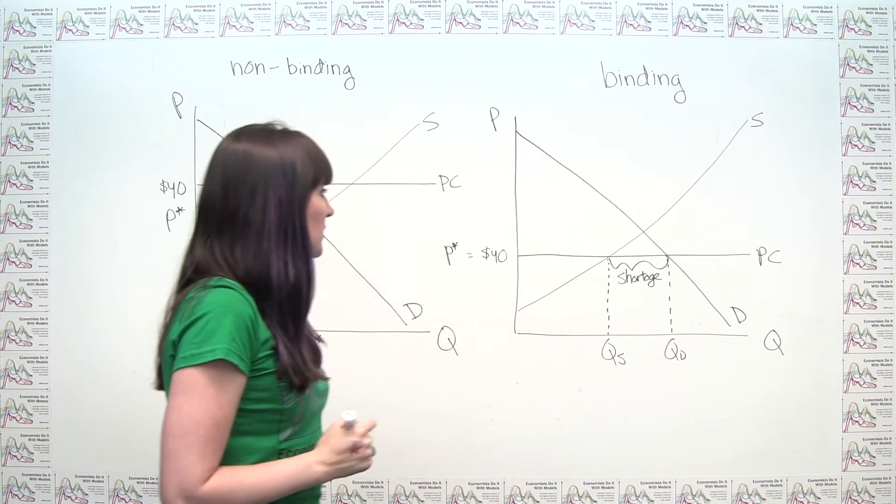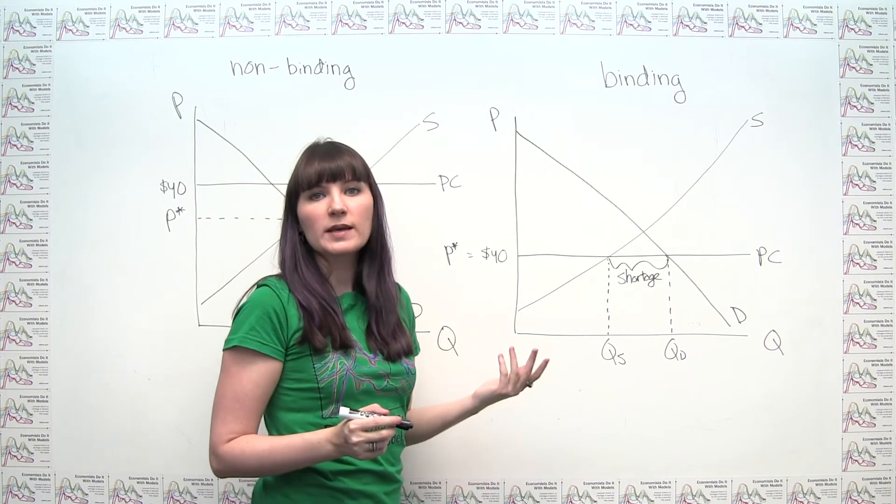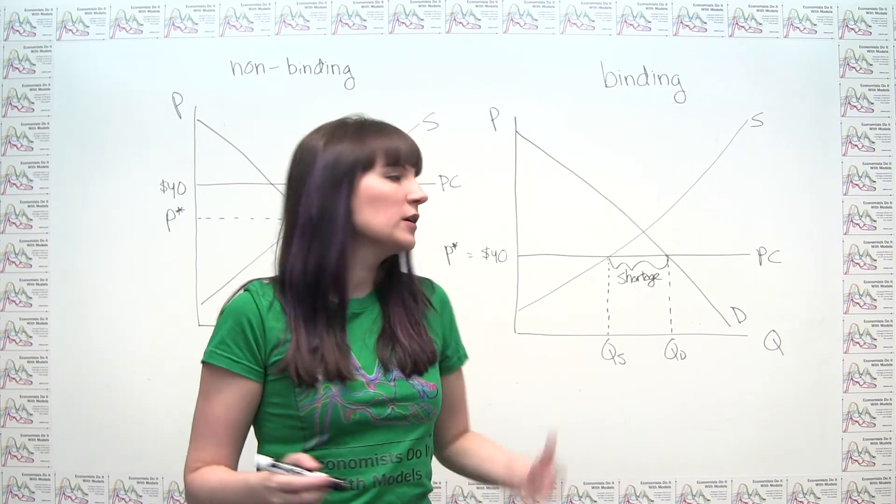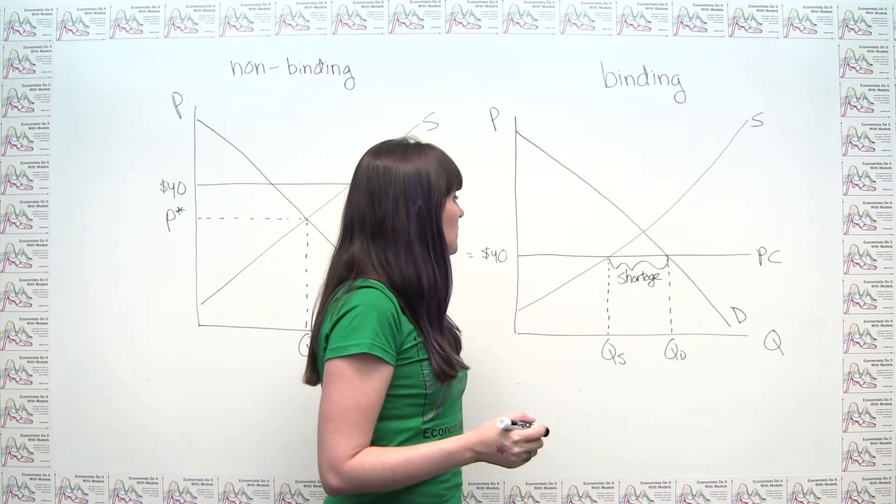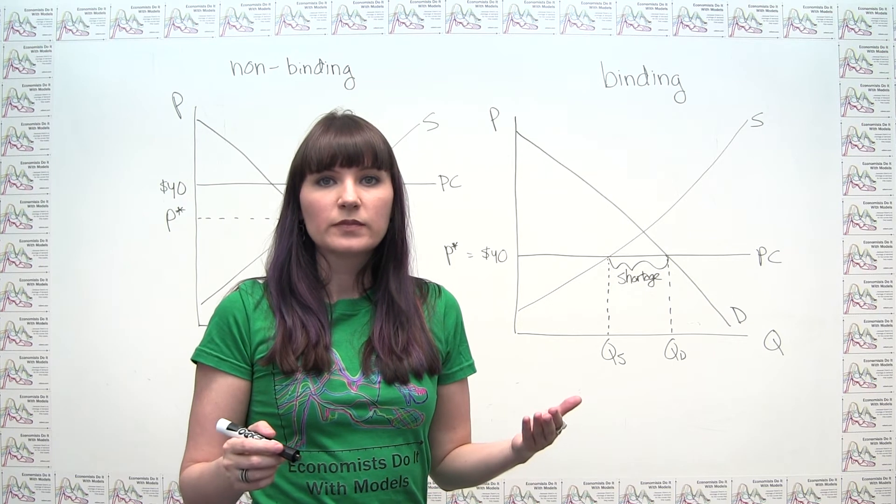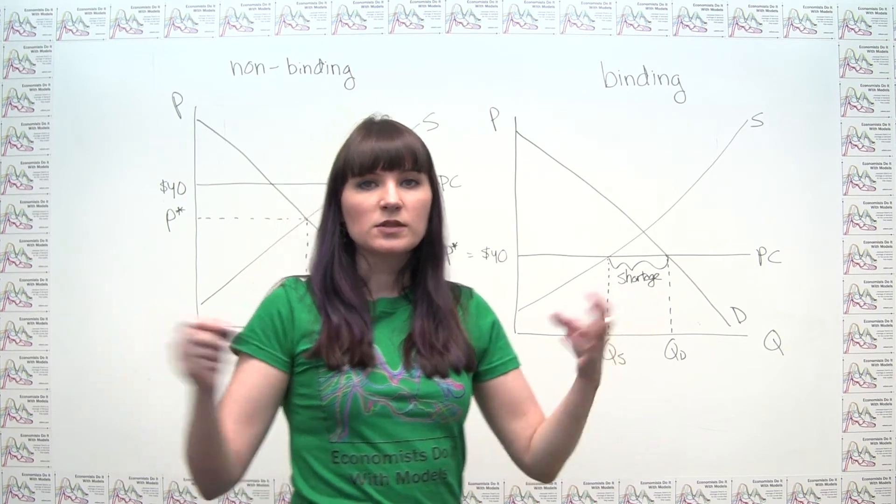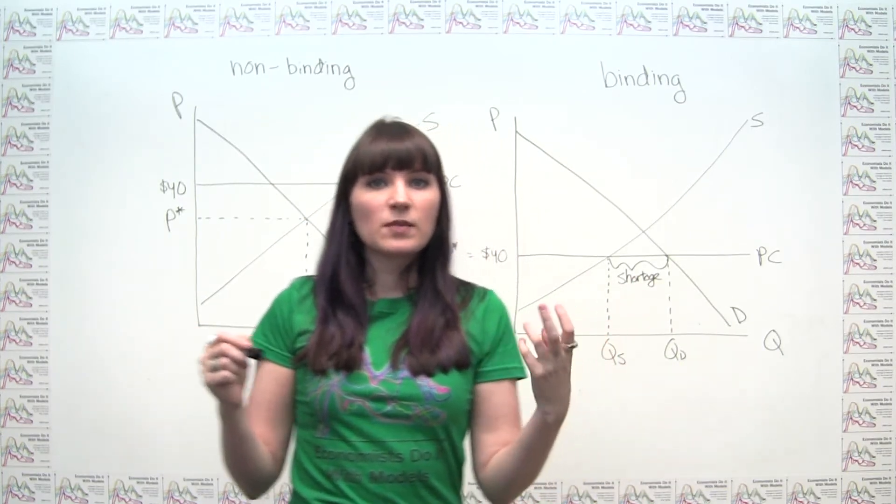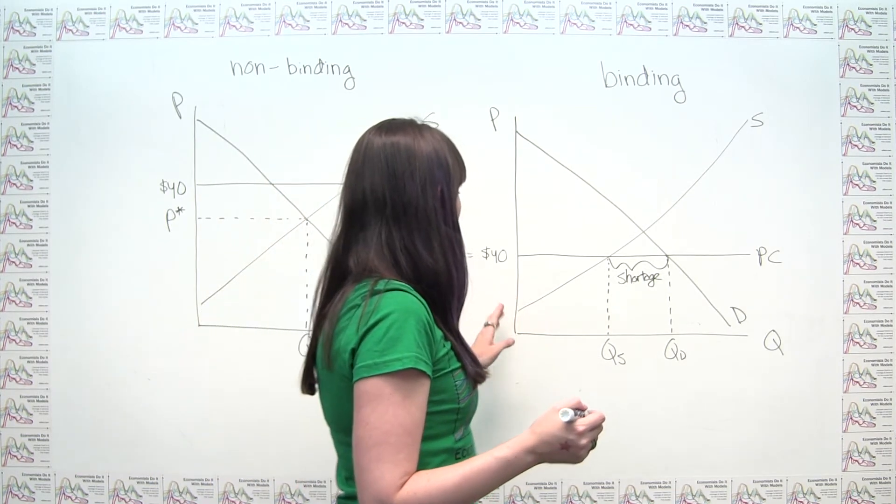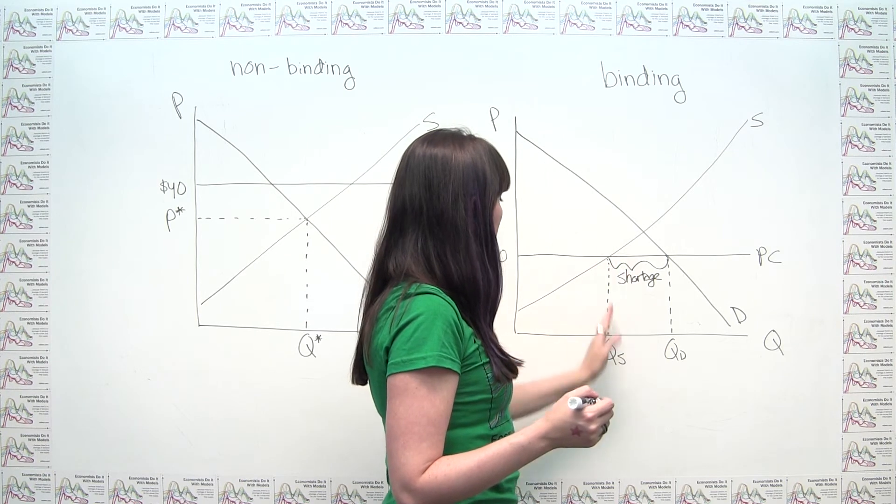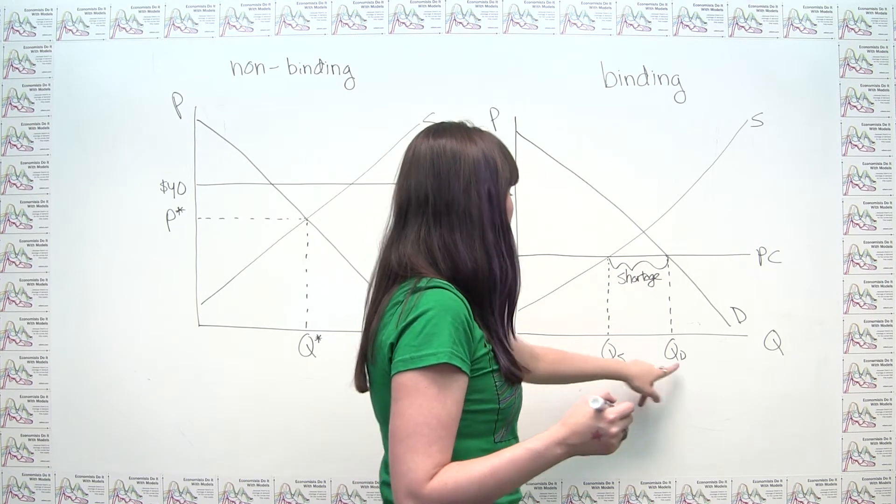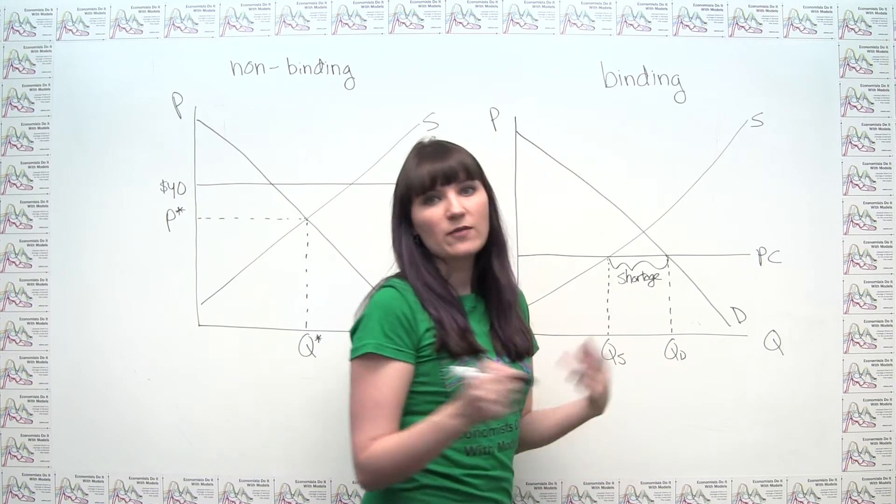So then it's worth thinking about, well, what counts as our equilibrium quantity? Well, our equilibrium quantity, our Q star, is the number of items that are actually bought and sold. And hey, guess what? It takes two to tango. It takes both a buyer and a seller to make a market transaction happen. So we can think about here, up until this quantity, we have both a buyer and a seller. But from this quantity, Qs out to Qd, we have buyers but no sellers.